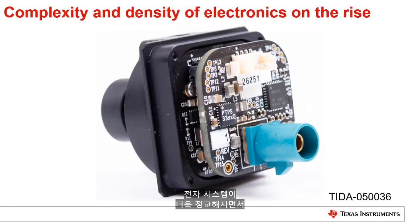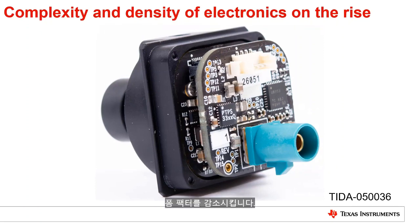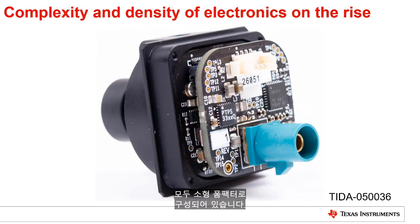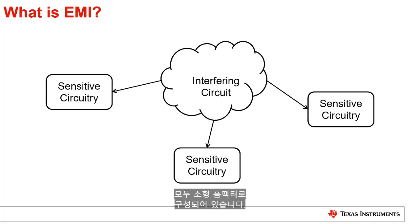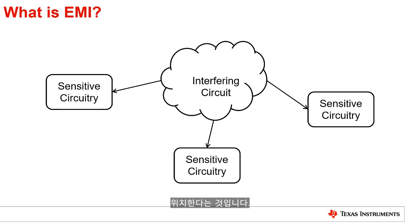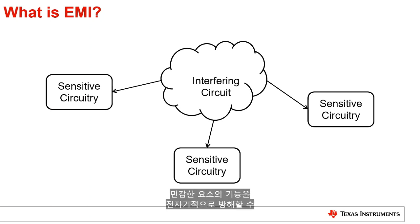As electronic systems get more sophisticated, diverse circuits are packed in close proximity to one another, improving the functionality and reducing the form factor of the eventual solution. Take the example of this compact camera module for automotive driver monitoring systems. It combines a 2-megapixel imager with a 4 gigabits per second serializer and 4-channel power management integrated circuit, all packed into a small form factor. The byproduct of this improvement in complexity and density is that sensitive circuitry like the imager and signal processing elements sit very close to the power management IC, which carries large currents and voltages.